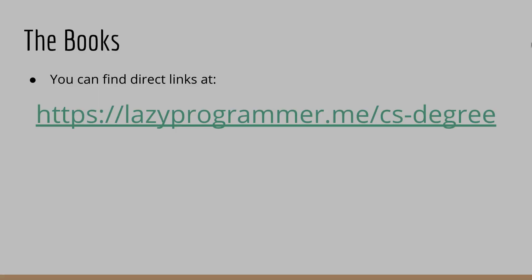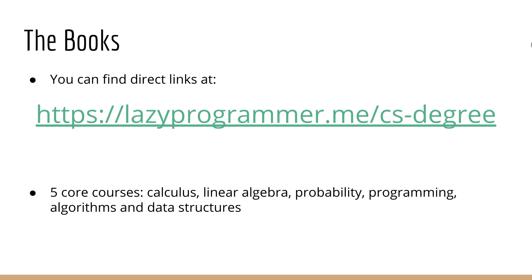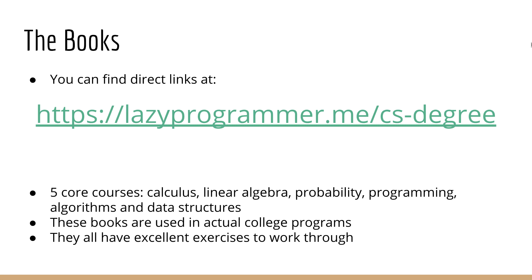So let's get down to the details. What books do I recommend? You can find all these books on my website at lazyprogrammer.me/csdegree, so you don't have to google these on your own. These books will focus on five core courses: Calculus, Linear Algebra, Probability, Programming, and Algorithms. I've chosen these books for several important reasons. First, many of these are books used by actual college programs, so if you want to make sure you're at the right level, this is the way. Second, these books come with excellent exercises to work through.